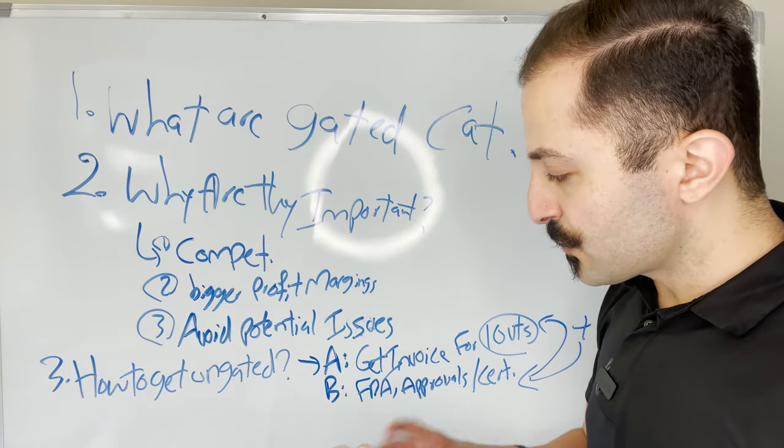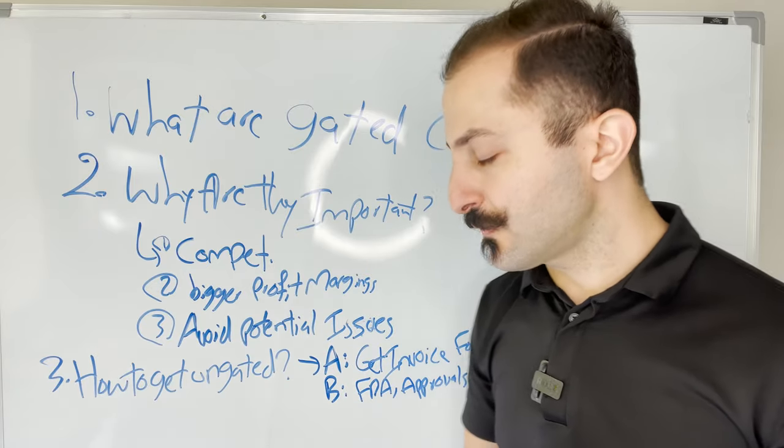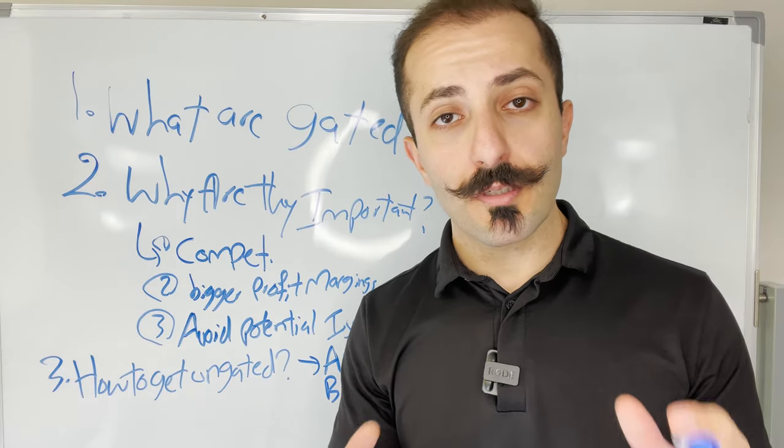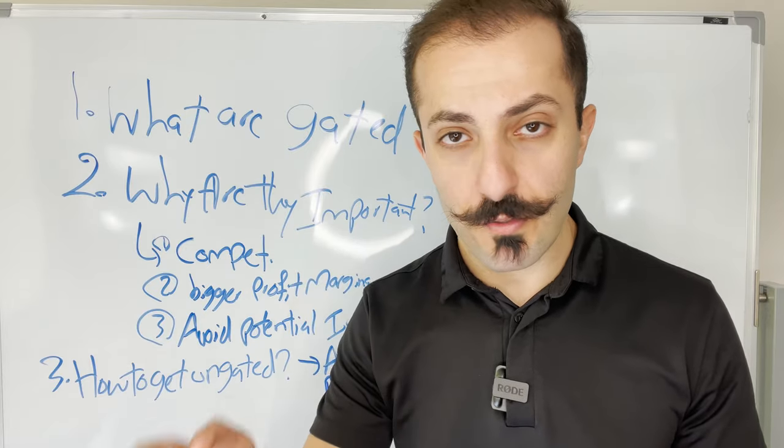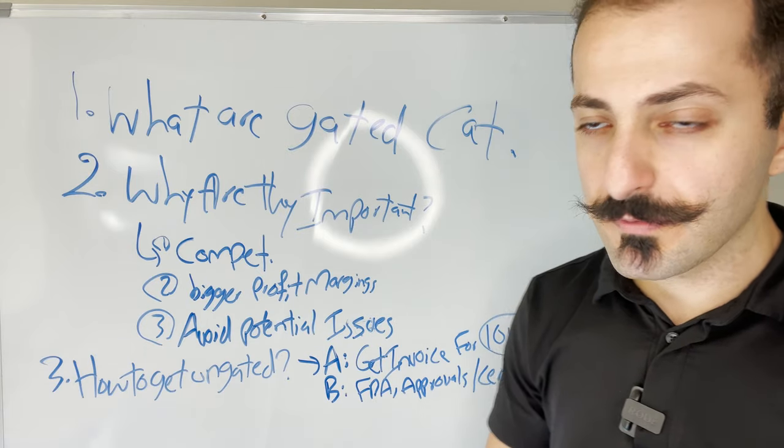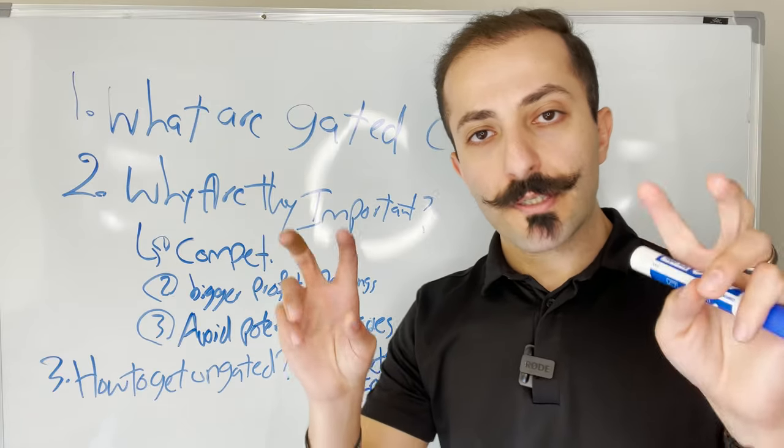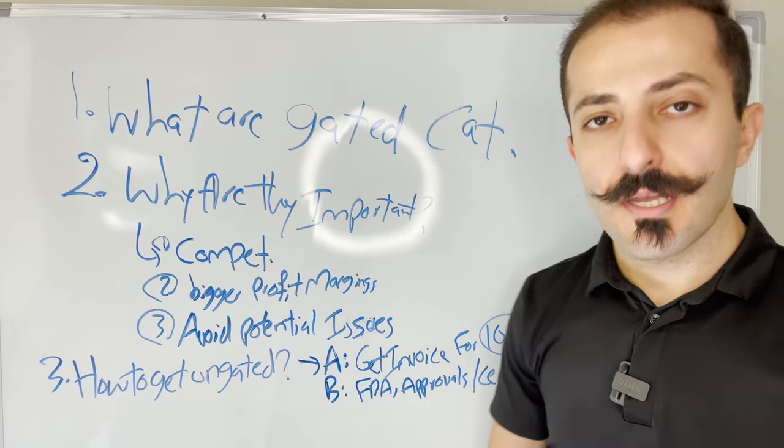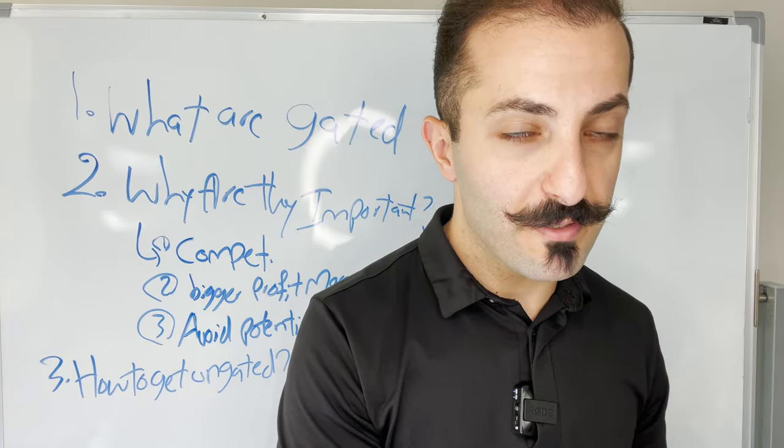The third thing is how to get ungated depends on the category. The very first section of the categories is the simpler ones to get ungated for like the toys category. You simply go to the supplier, you request a quote or an invoice for 10 units. You don't even need to pay for it. An invoice for 10 units, making sure that information in that invoice matches everything on your Amazon seller's account. So obviously you need a seller's account before you do any of that. And then number two, if it's the more complicated categories, again, if you're a complete beginner, I would probably not suggest this, maybe this, but not this.